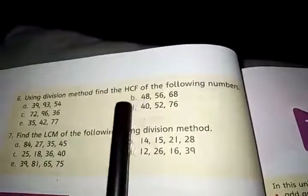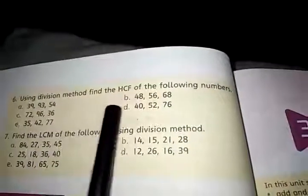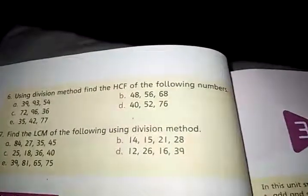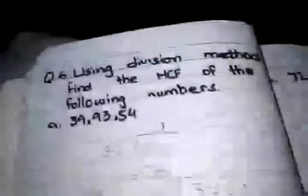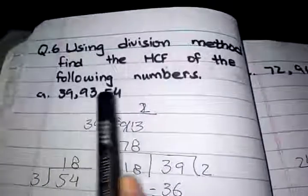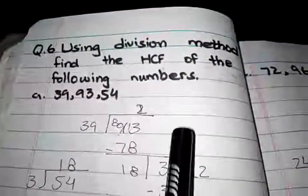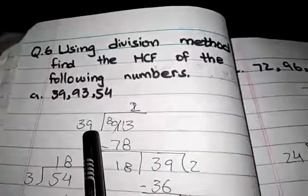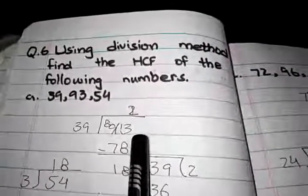In these questions we find the highest common factors and we use division method. Question number A is 39, 93, and 54. First of all, 39 is our divisor and 93 is our dividend.